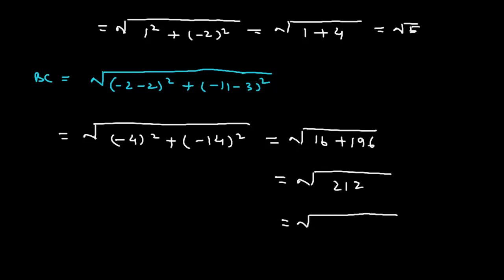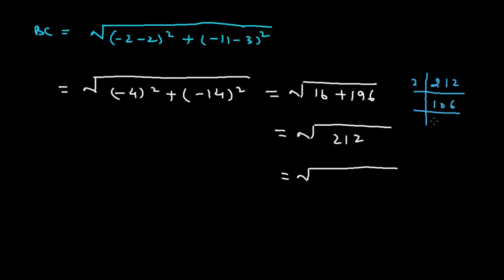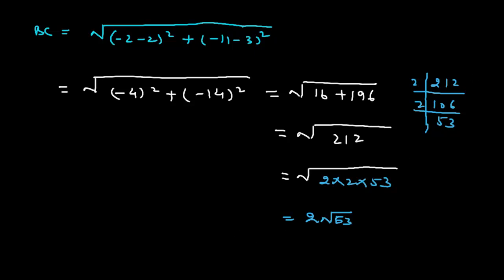This equals 212. Now we shall factorize 212 using the prime factorization method. We can divide 212 by 2 to get 106, and divide 106 by 2 to get 53. Since 53 is a prime number, 212 equals 2 times 2 times 53, which means BC equals 2 times the square root of 53.